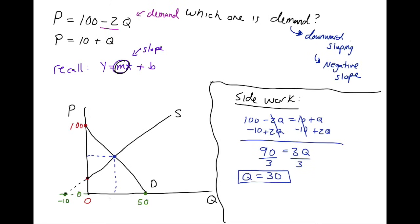This point right here must then be 30. The equilibrium quantity is going to be 30. But what's the equilibrium price in this market? Well, we just have to take this and just plug it in. Plug it into whichever equation you want. I'm going to use the supply equation because it's easier.